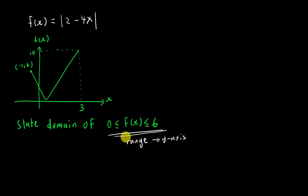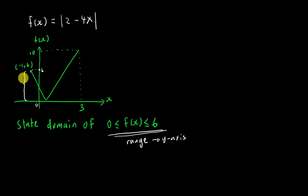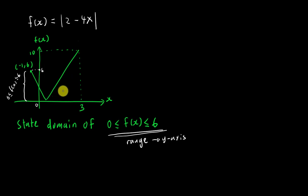f(x) basically represents the y-axis. So we want to know: from y = 0 to y = 6, what is the corresponding domain? We can see from the coordinate given that one point is (−1, 6), so the y-value at that coordinate is 6. They are asking for the domain of the graph where f(x) goes from 0 to 6.